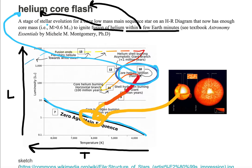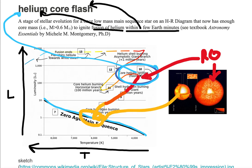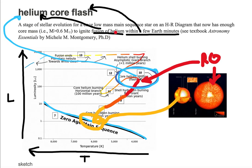So the helium core flash is a stage of stellar evolution for low-mass main sequence stars on the HR diagram, such as the Sun, that now has enough core mass — m greater than 0.6 solar masses — to ignite fusion of helium within a few Earth minutes. We have what's called a red giant, and this red giant undergoes the helium core flash when it has enough mass to ignite fusion of helium within its core.